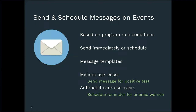We have a lot of functionality now around sending and scheduling of messages. We've long been able to send messages for a program on a routine basis. What's new in 2.34 is the ability to send messages based on program rules and conditions. You can build program rule expressions where the action allows you to send a message — the message can be sent immediately or scheduled for a later stage. It's based on messaging templates and allows you to customize the text and content. Use cases include sending messages for positive malaria tests to relevant people, or scheduling a reminder for antenatal care. This provides more flexibility, more configurability, and finer-grained control over when and if to send messages.